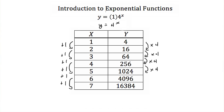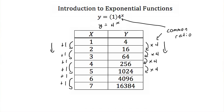So exponential functions always work this way: if your x value increases by the same amount through addition every time, then your y values increase through multiplication by the same value every time. This value we multiply by is called the common ratio, and it is also the base of your exponent.